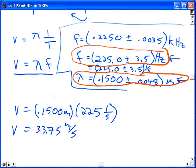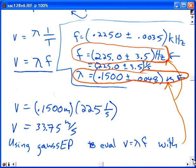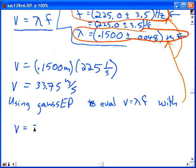So using Gaussi P to evaluate v equals lambda f with these two values or sets of values, we get v is equal to 33.8 plus or minus 1.2 meters per second.